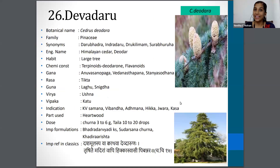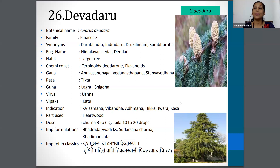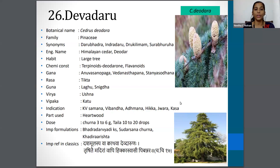The next one is Devadaru, botanical name Cedrus deodara from the Pinaceae family. Synonyms are Dharubhadra, Indradaru, etc. The English name is Himalayan Cedar or Deodar. The part used is the heartwood, and the dose is three to six grams of Churna and 10 to 20 drops of Taila.